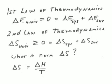Going back to our first law of thermodynamics, the change in energy of the universe is zero. What is the change in energy of the universe? It's the change in energy of the system plus the change in energy of the surroundings. Very simply, what it says is they have to be exactly the same amount but opposite in sign. Any energy lost by the system has to end up in the surroundings, and any energy that enters the system has to have come from the surroundings. This means we only need to know one or the other of them to know what they both are.